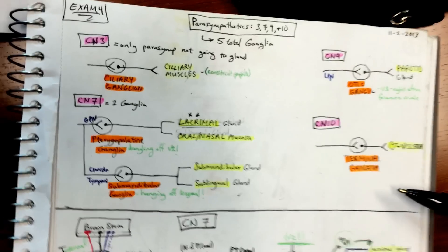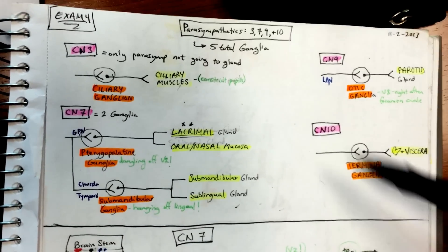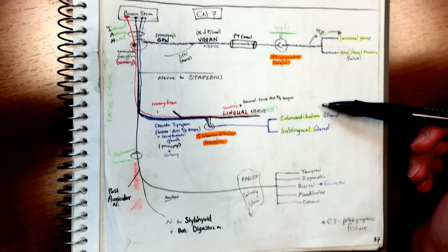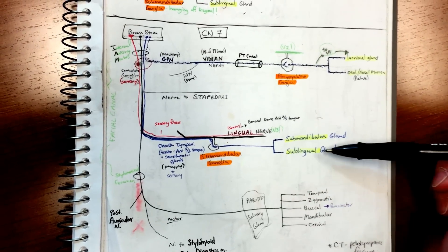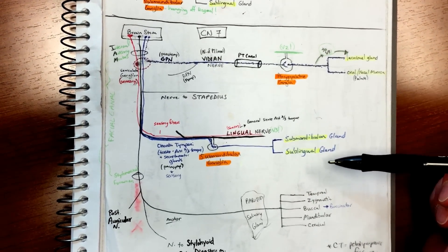Okay, so real quick, this is in color what we drew a second ago - cranial nerves 3, 7, 9, and 10. And now we're gonna go and do cranial nerve 7, the facial nerve. This is it in color, but I'll draw it by hand so I can explain it in case you want to draw it.